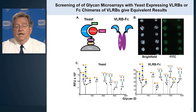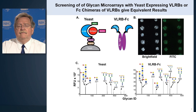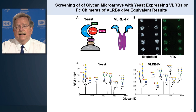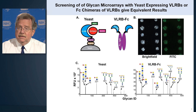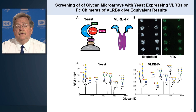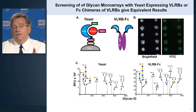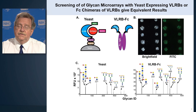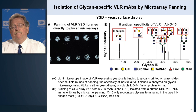This shows that when you take the yeast itself and put it on the microarray, you can see the yeast actually binding — many hundreds of yeast binding to each spot. Every spot on the array has the exact same sugar, so one yeast making one antibody binds to all ten spots equivalently. The yeasts are also labeled green via green fluorescent protein, so we can easily see them binding. The VLRB-FC recombinant antibody shows exactly the same binding as the yeast from which it was derived.